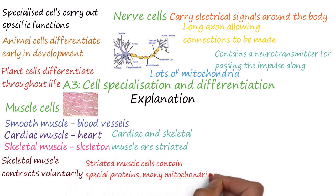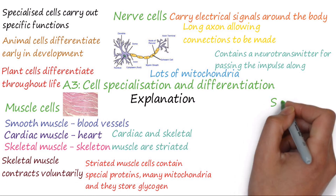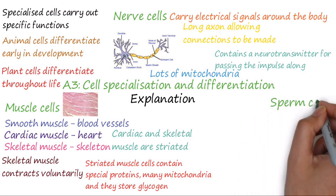Striated muscle cells are adapted to contain special proteins which allow the fibres to contract, and many mitochondria to produce the energy needed to allow the cells to contract. Striated muscle cells can also store glycogen, which can be broken down and used by the mitochondria as an energy source.